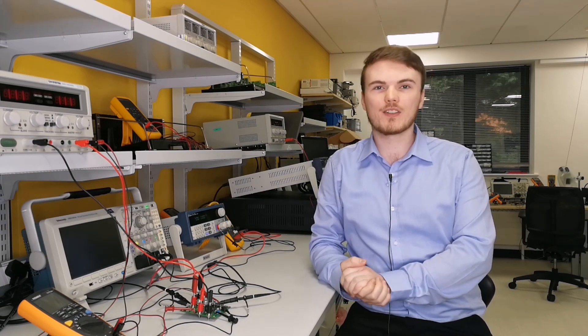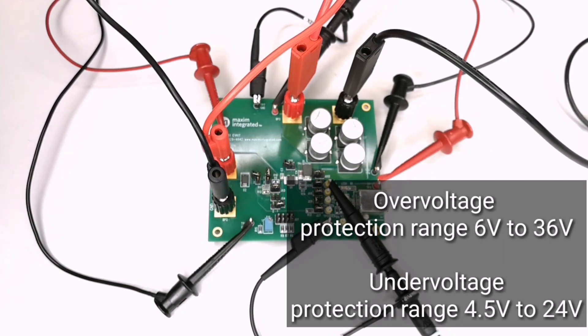Right out of the box the MAX17561 has pre-configured UV-LO and OV-LO thresholds. These are configured by jumpers on the EV kit.